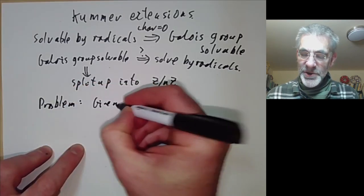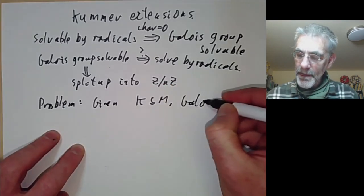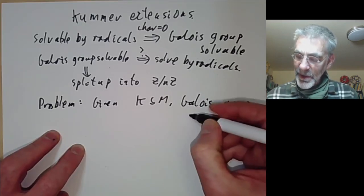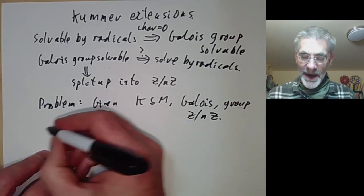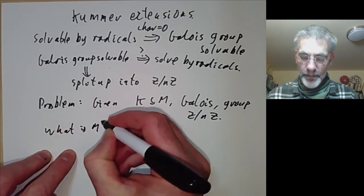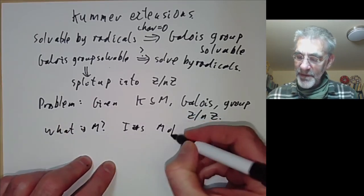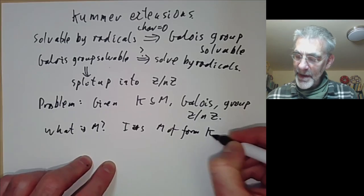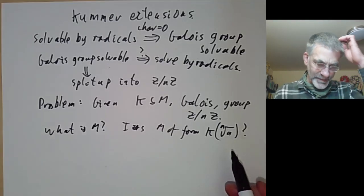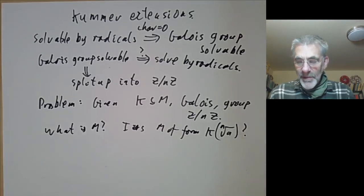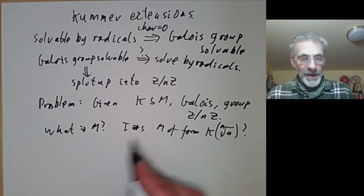Given an extension k contained in m which is Galois with cyclic Galois group of order n, what can we say about m? In particular, is m of the form k with the nth root of something adjoined? Well, in general it's not, but it quite often is.